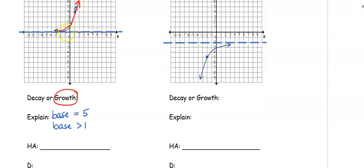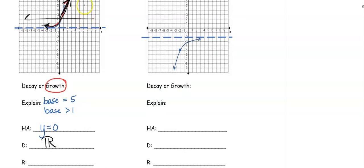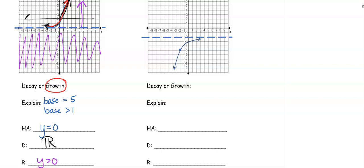The horizontal asymptote on our graph is at y equals 0. For domain and range: domain is your movement left and right. This arrow tells me the graph goes forever to the left, and this arrow goes up and to the right forever, so our domain is all real numbers. The range is your movement up and down. My graph is never existing below the asymptote, so the range is greater than 0 — not greater than or equal to 0, because the graph can't actually be 0. Zero is the asymptote, that imaginary line your graph approaches but doesn't touch.